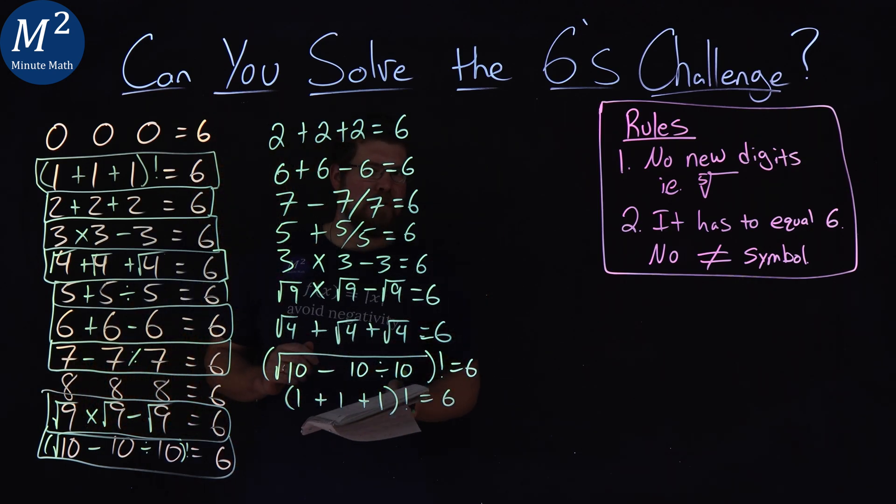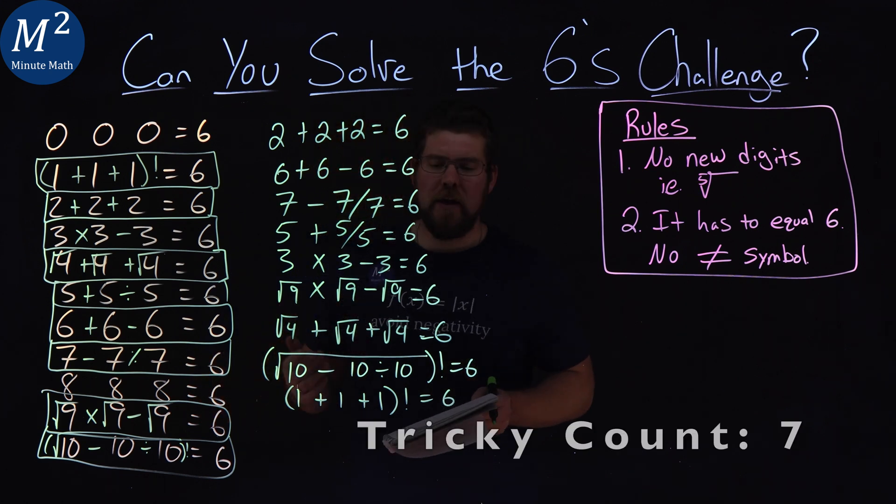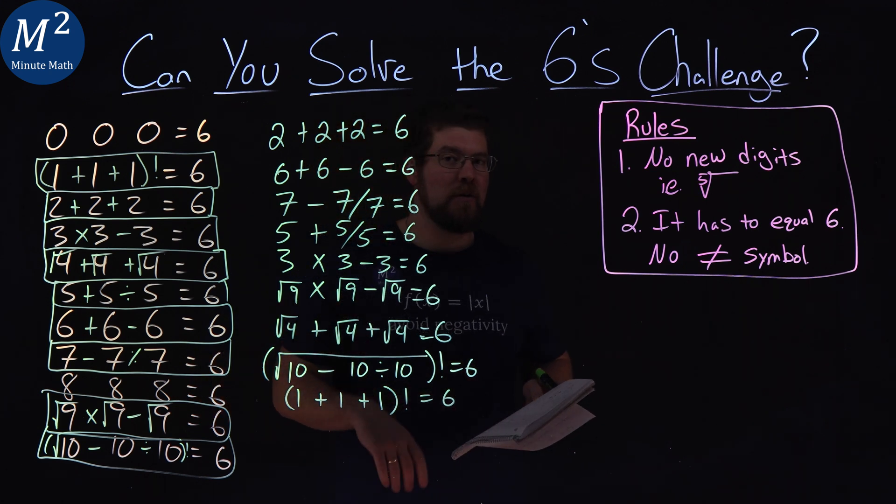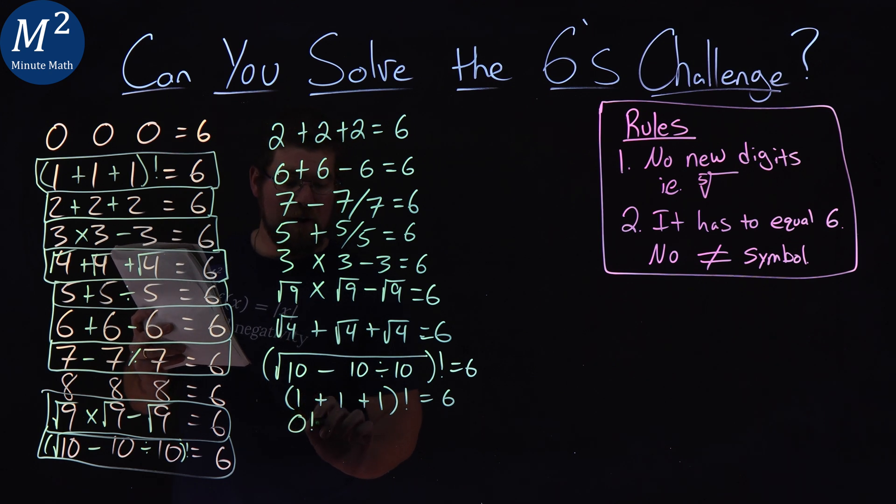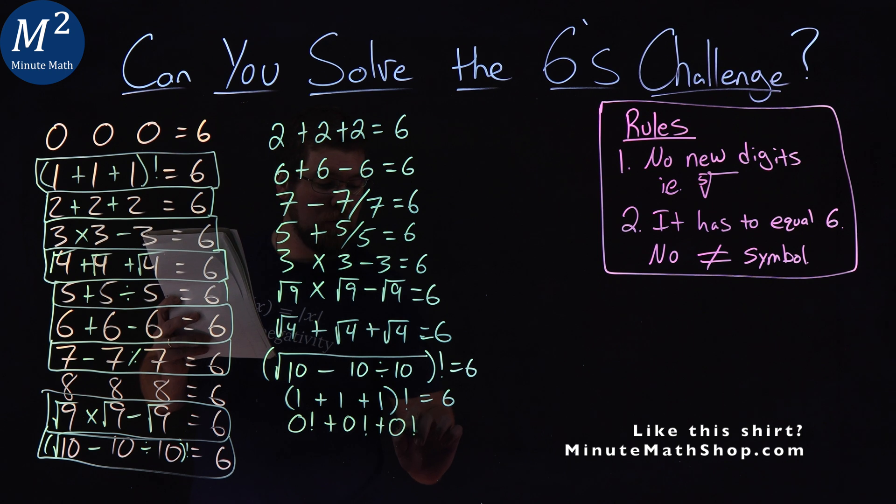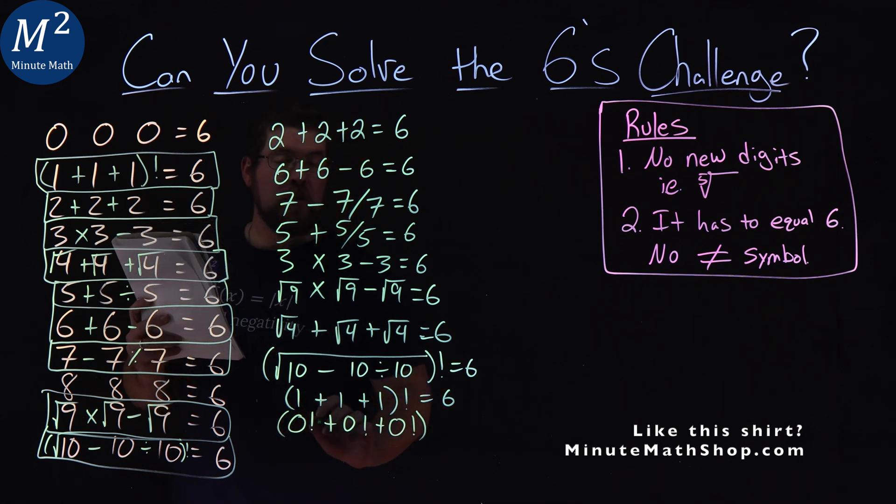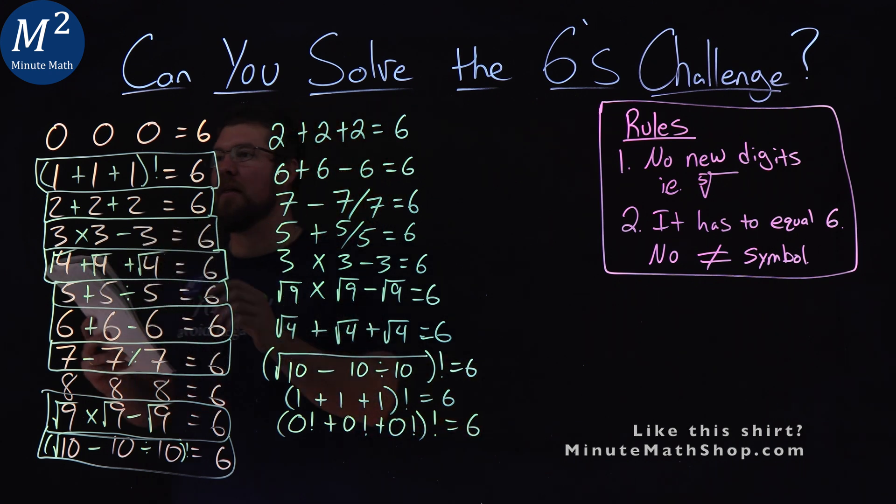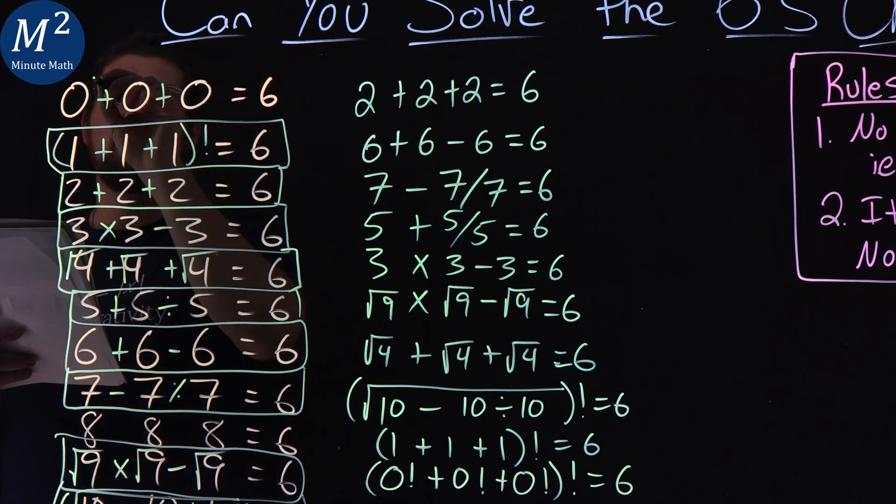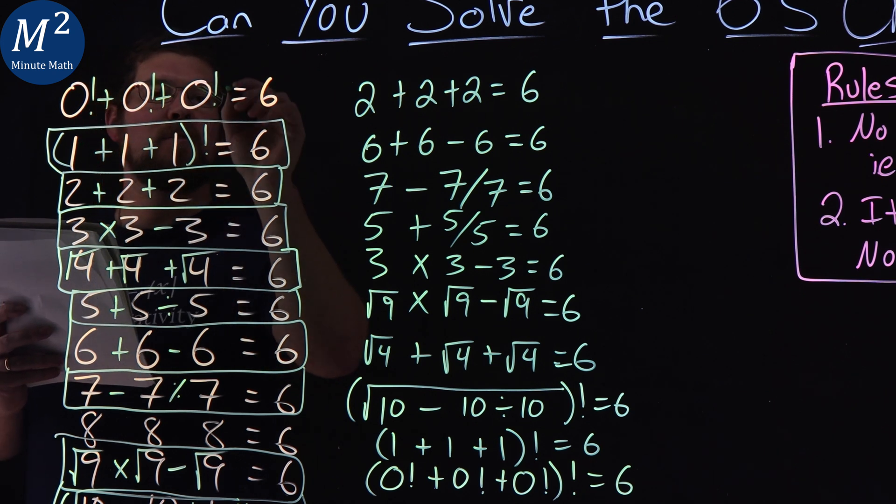What do we have left? We have the zeros and the eights. The next one was zero, and this one at first was kind of tricky to think about, but factorial helps us out. Interesting property about zero factorial, it's equal to one. So zero factorial plus zero factorial plus zero factorial is three. Then we factorial that bad boy. Factorial of three is six. So I apply that here. Plus, plus, factorial, factorial, factorial, and factorial the whole thing.